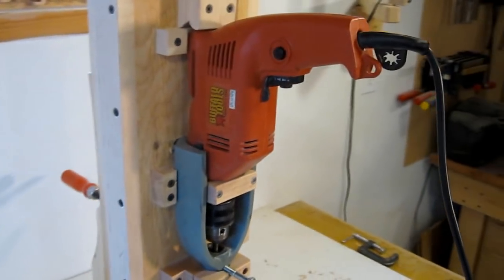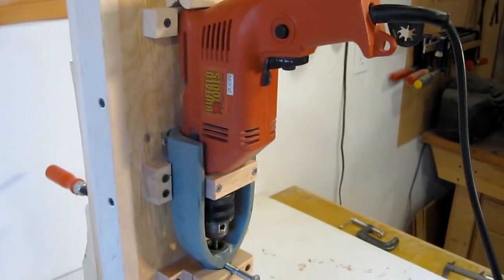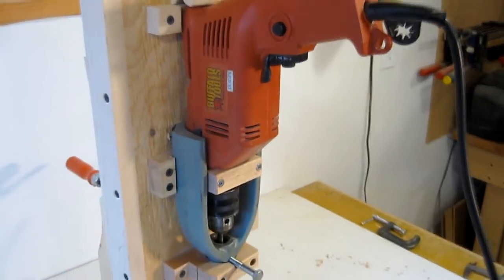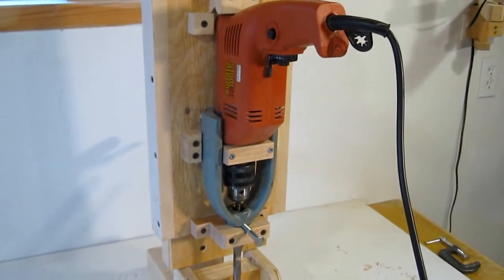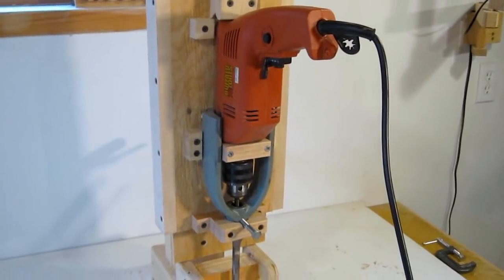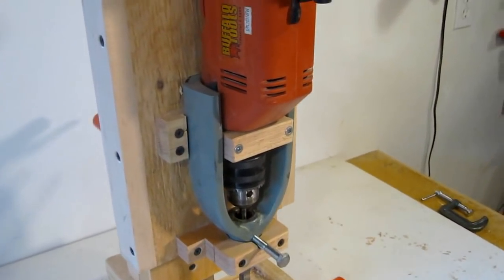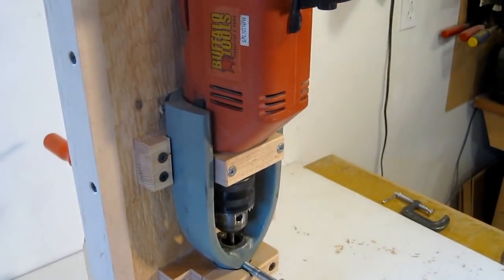To get the right kind of drill there's a Dewalt drill that would be perfect, but that costs $150. And a brand new cheap hollow chisel mortiser only costs $200. So it really doesn't make much sense to spend a lot of money trying to build a cheap hollow chisel mortiser if you can buy one for that little money.